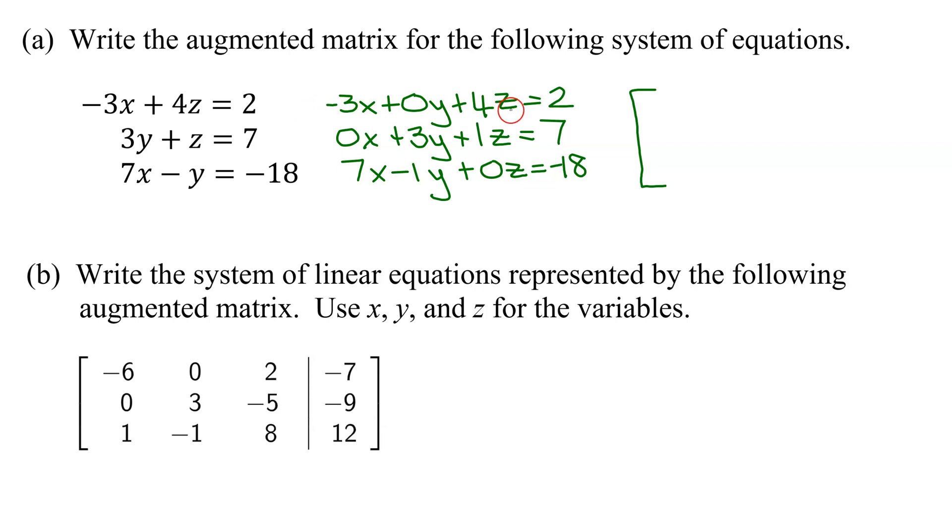Just strip off the coefficients, so I'm going to get negative 3, 0, 4, and instead of equals, we put the augmented bar with the constant 2 on the other side.